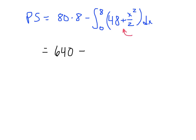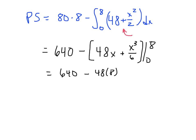So we're going to subtract 48x. Oops, let's make that 48x. Sorry about that. 48x plus x cubed over 6. And we evaluate that from 0 to 8. And of course, I've already cranked this out. This is 640. The 0s are going to be fine, but we're going to subtract off 48 times 8 and then also subtract off 8 cubed over 6.